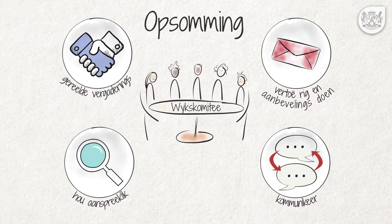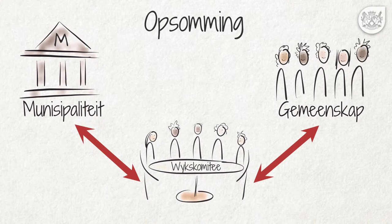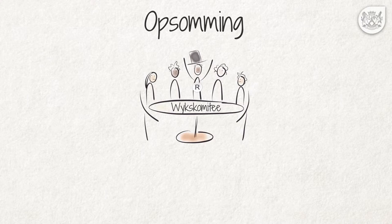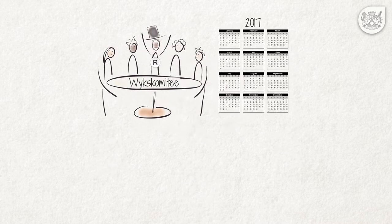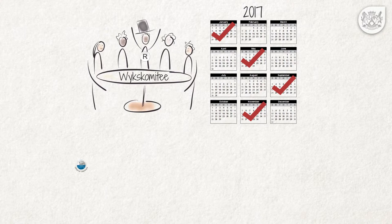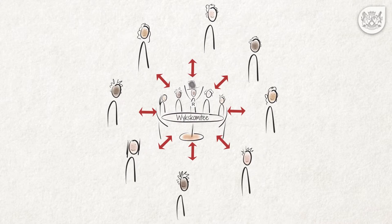Opsomming. In hierdie video het ons die aard, funksies en verantwoordelikhede van wykskomitees verduidelik. Die hoofoogmerk van wykskomitees is om te verseker dat daar doeltreffende kommunikasie tussen die munisipaliteit en die gemeenskap bestaan. Die wyksraadslid is die voorsitter van die wykskomitee, wie se lede demokraties verkies is en 'n wye verskeidenheid gemeenskapsbelange verteenwoordig. 'n Wykskomitee moet minstens vier keer per jaar vergader en ook wanneer ander belangrike munisipale sake soos die GOP of die jaarverslag en die begroting opgestel word. Wykskomitees het ten doel om die demokratiese proses binne die bereik van die mense te bring.